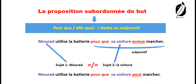« Pour que », « afin que », plus verbe au subjonctif. Ils sont utilisés quand on a deux sujets différents. Ici, nous avons Morad. Et ici, nous avons la voiture. Alors, il y a deux sujets différents. Cette phrase est donc fausse. « Pour que », toujours, plus verbe au subjonctif.